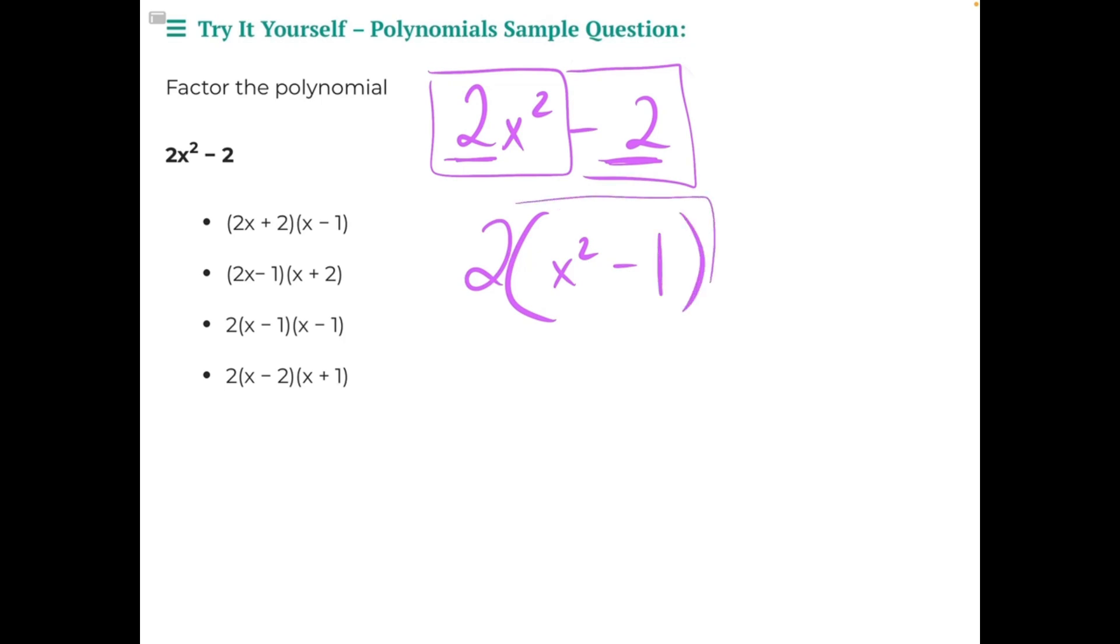Now when I take a look at this right here, these numbers inside the parentheses, this is what we call a difference of squares. And a difference of squares is exactly what it sounds like. It is finding the difference between two perfect squares.